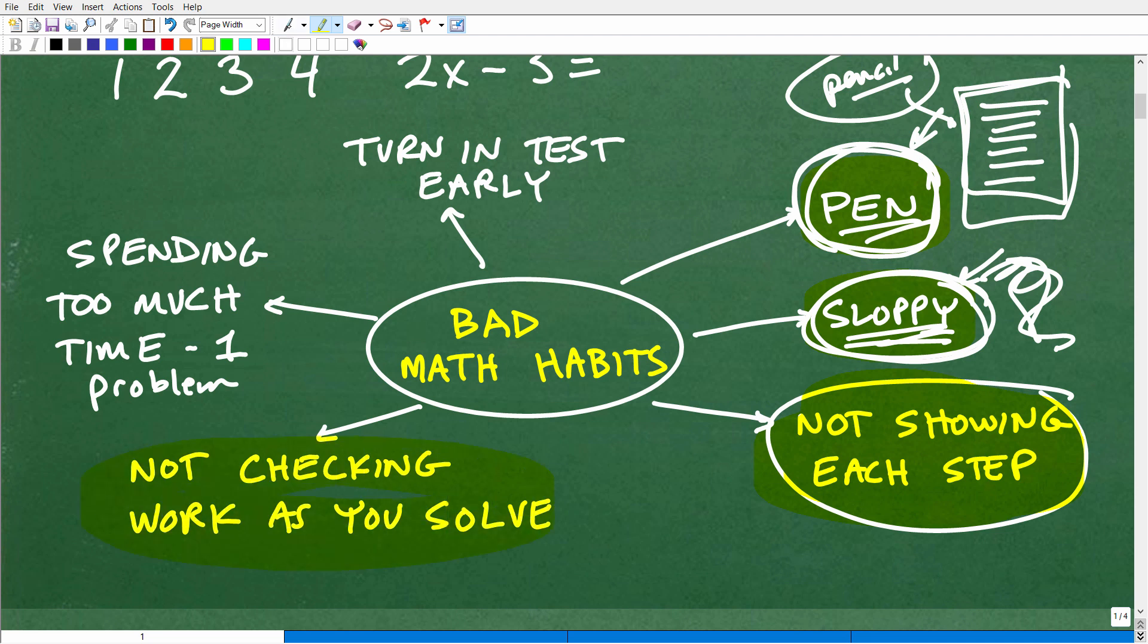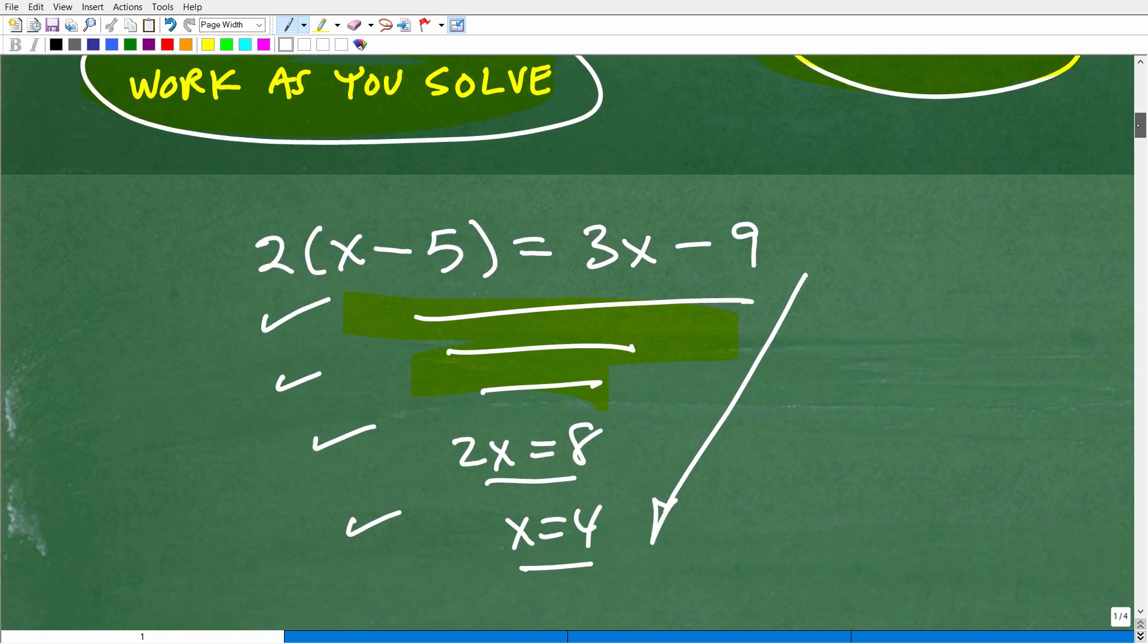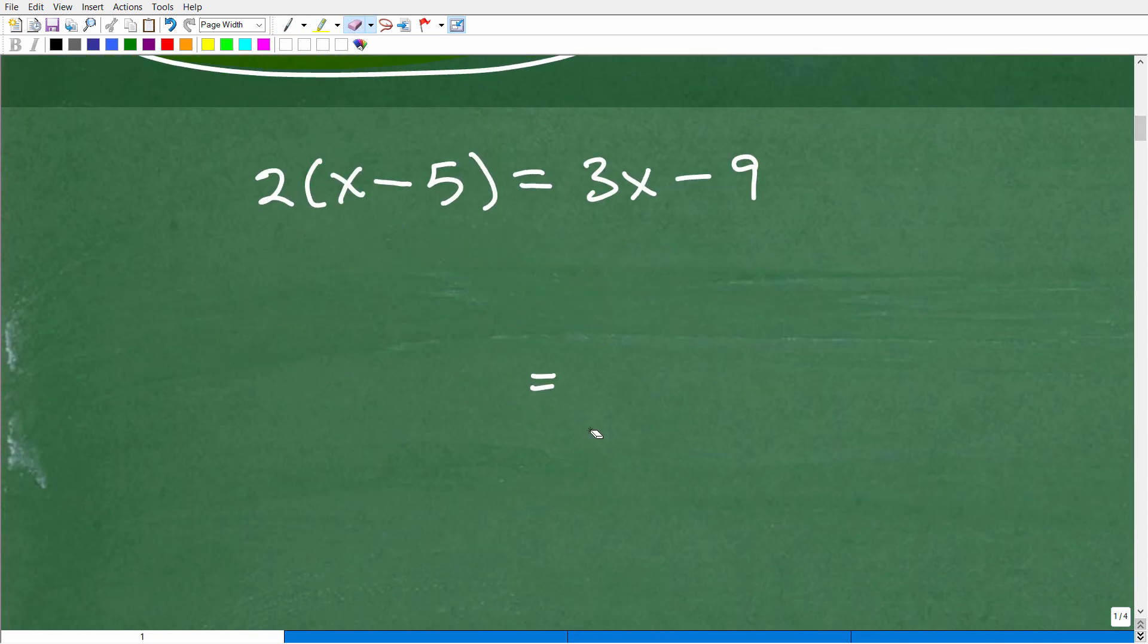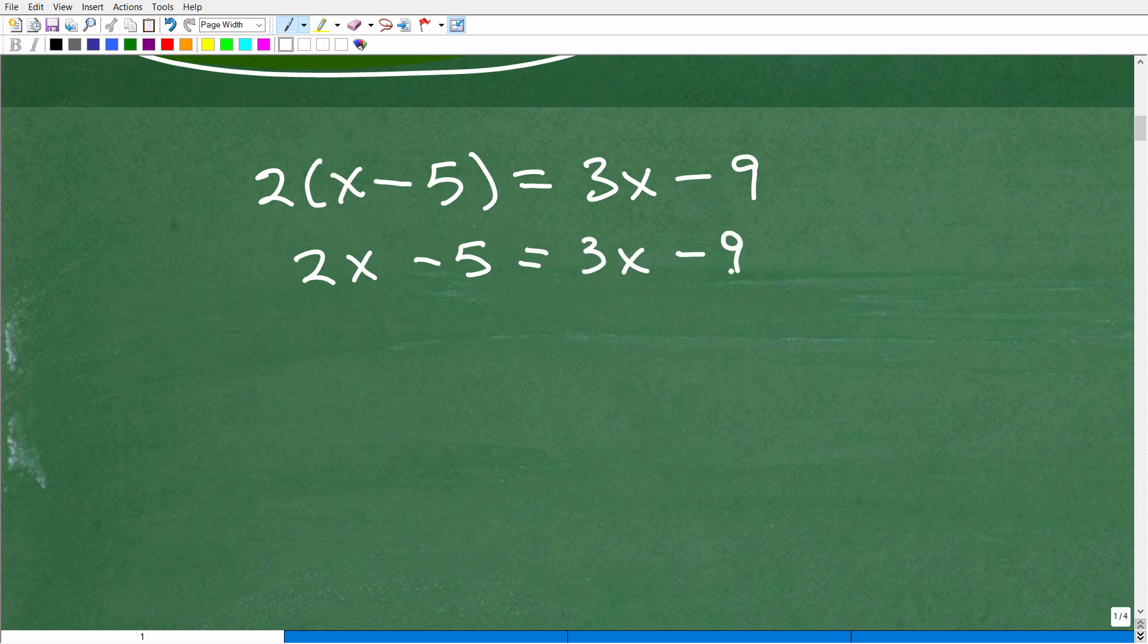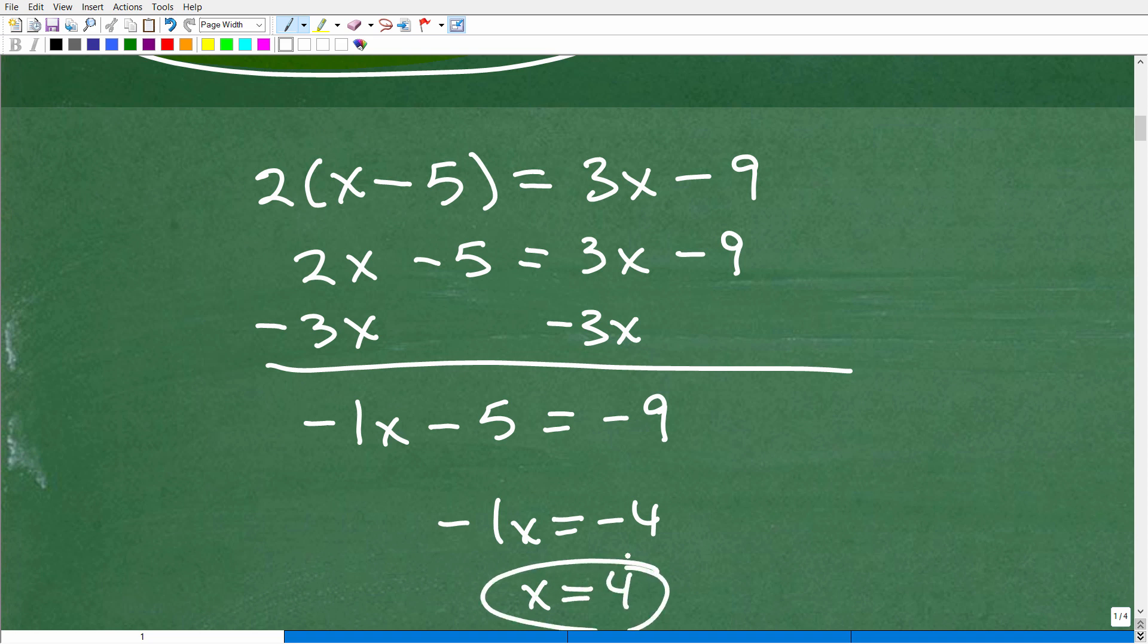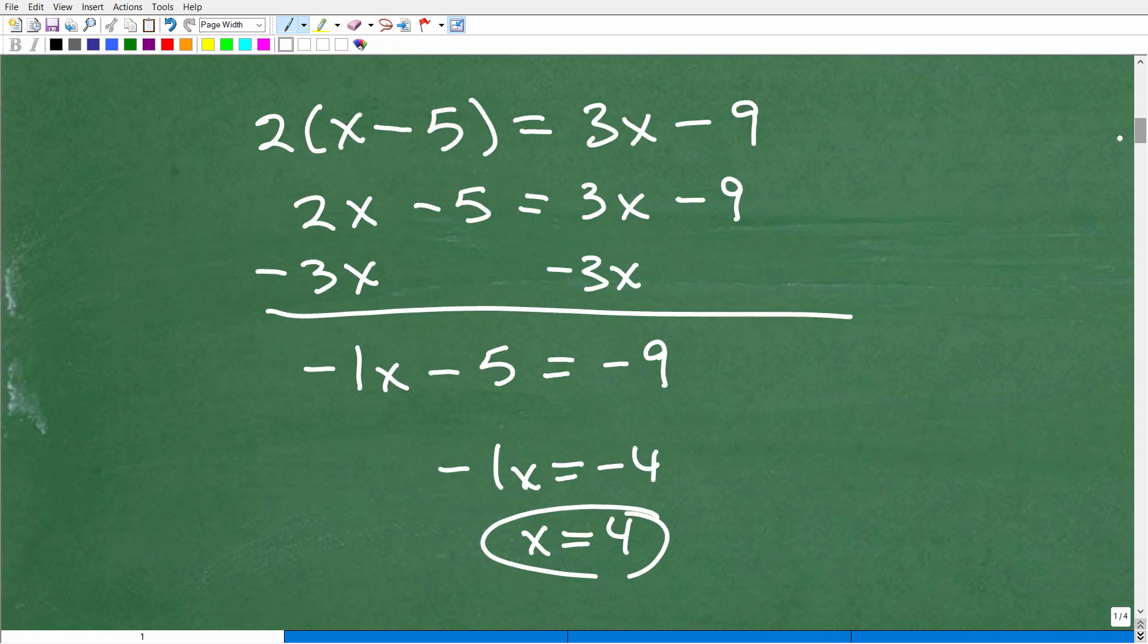All right, the next thing is, and it's kind of related to this other step. You're not showing each step, but let's suppose you do show each step, but you're not checking your work as you go. So let's kind of go back to this problem here, and let me do this real quick. So let's say I went like this, 2x - 5, that's an error, 3x - 9. So then I went, let's see here, I'm just making something up, just stick with me for one second. So I have -1x - 5 = -9, and then this would be pretty typical of what I might see in a classroom, something like this. So here is the answer.